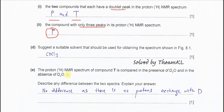Part D: suggest a suitable solvent for obtaining the spectrum shown in Figure 8.1. For proton NMR, we cannot use CHCl3 because the H will produce a signal. Instead we use the deuterated solvent CDCl3. This is called a deuterated solvent.